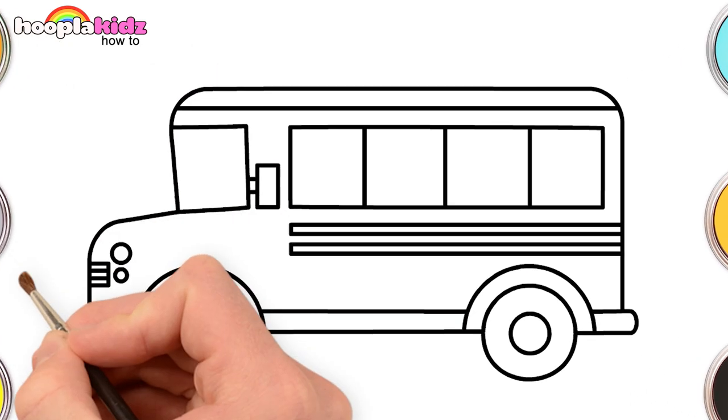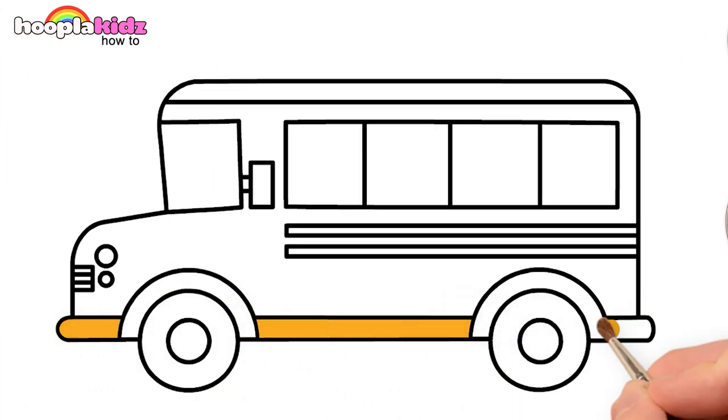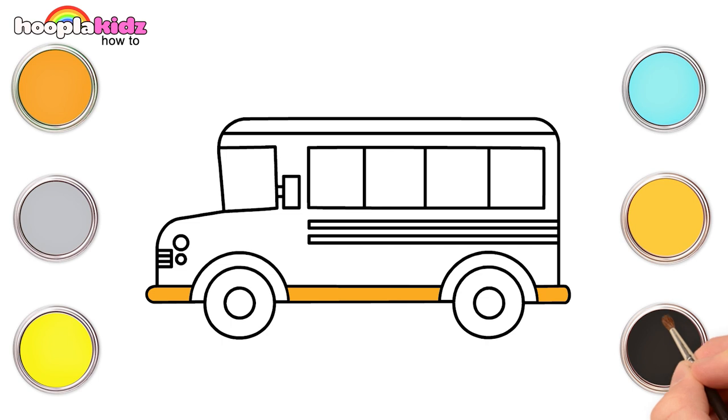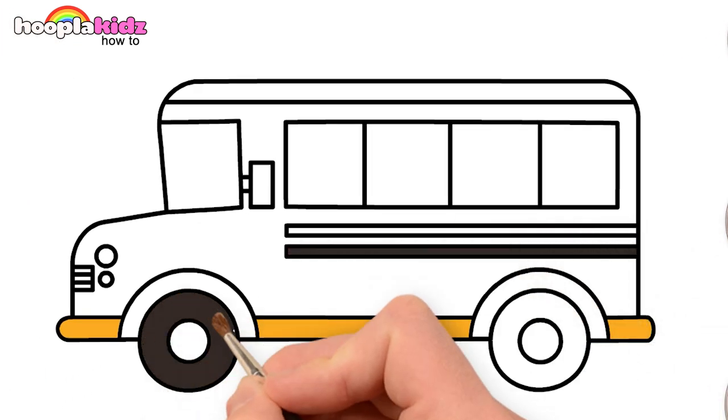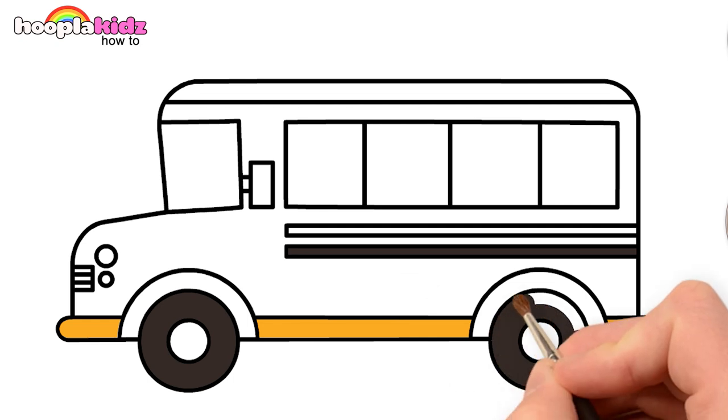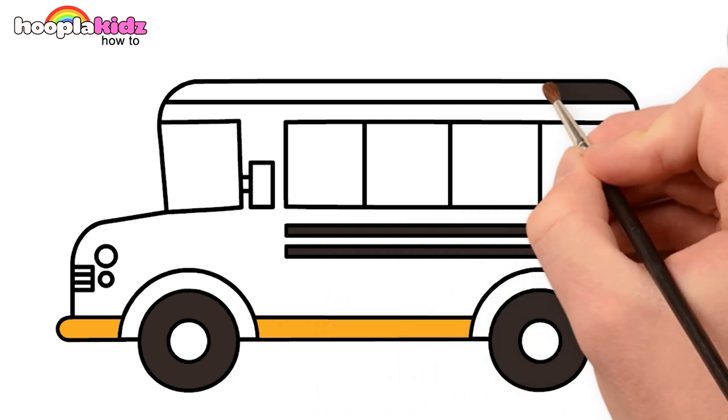Let's paint the bus with bright colors. Use orange to paint the bottom of the bus and black for the lines on the bus, the wheels, and the top of the bus.